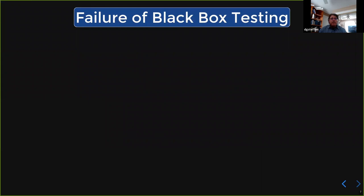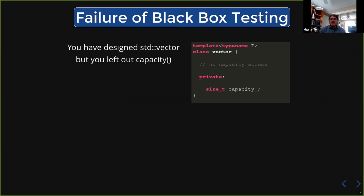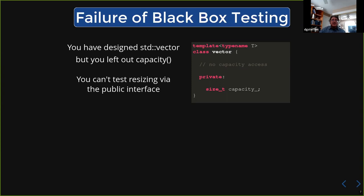You've got a class and you'd like to test using black box methods — using only the public interface. As a stupid example, let's say you've written a standard vector but left out the capacity call, so you can't tell how much memory it's really got sitting underneath. The vector knows — there's some private thing that tells you how big the memory chunk is — but there's no way to test it from outside, and only after the fact do you realize you can't unit test your reallocation strategy and growing the vector.